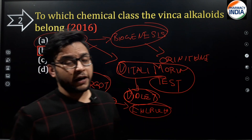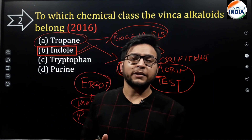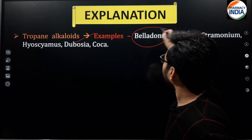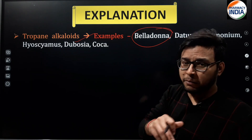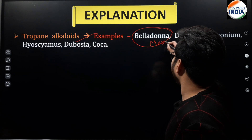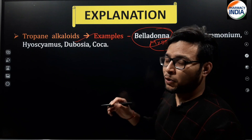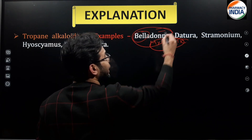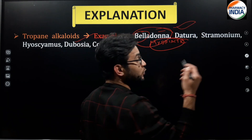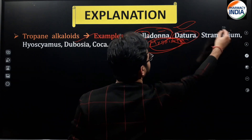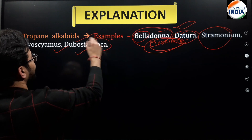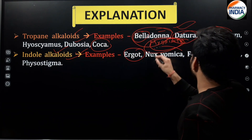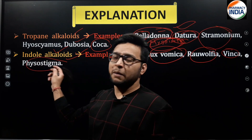Now the explanation: tropane alkaloids include Belladonna, Datura stramonium, Hyoscyamus, Duboisia, and Coca. Belladonna is used as a mydriatic agent — it causes pupil dilation. Trick to remember: 'belly dancer' has dilated eyes. Coming to indole alkaloids: Ergot, Nux vomica, Rauwolfia, Vinca, and Physostigma are all indole alkaloids.